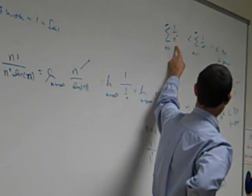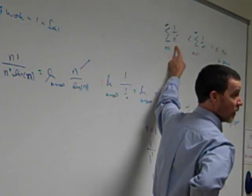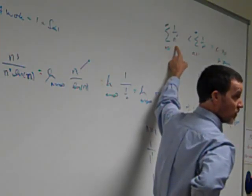2 squared, 3 cubed, 4 to the 4th, 10 to the 10th. That's a huge number, right? We're talking like our federal budget.